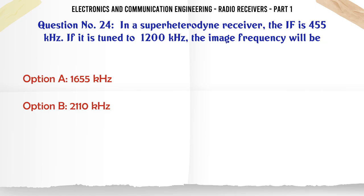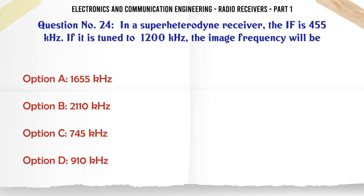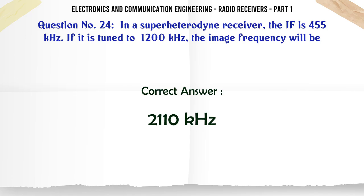In a superheterodyne receiver, the IF is 455 kHz. If it is tuned to 1200 kHz, the image frequency will be: A. 1655 kHz. B. 2110 kHz. C. 745 kHz. D. 910 kHz. The correct answer is 2,110 kHz.